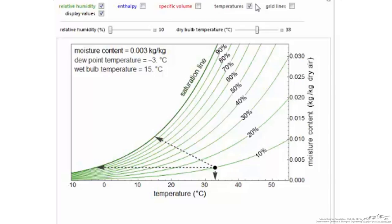Some scales have temperatures along the saturation curve, but you can always drop a vertical line once you get to the saturation curve down to the x-axis to read the temperature. In this case, the dew point is negative 3 degrees C.